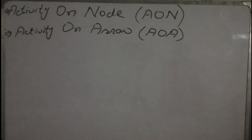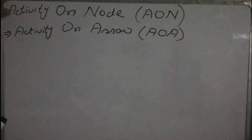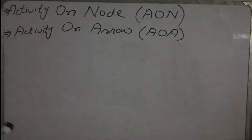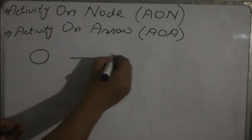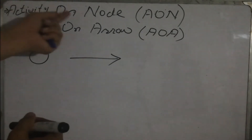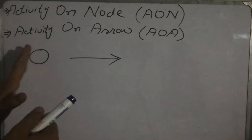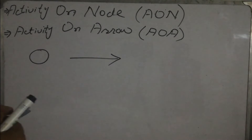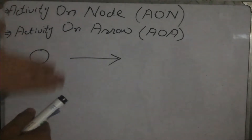There are two techniques we can use to draw a network diagram. The first is the Activity on Node technique, where the activity is represented by the node. The second is the Activity on Arrow technique, where the arrow represents the activity. In Activity on Node, the node marks the start and end of the activity, while in Activity on Arrow, the tail is the start and the arrowhead is the end.